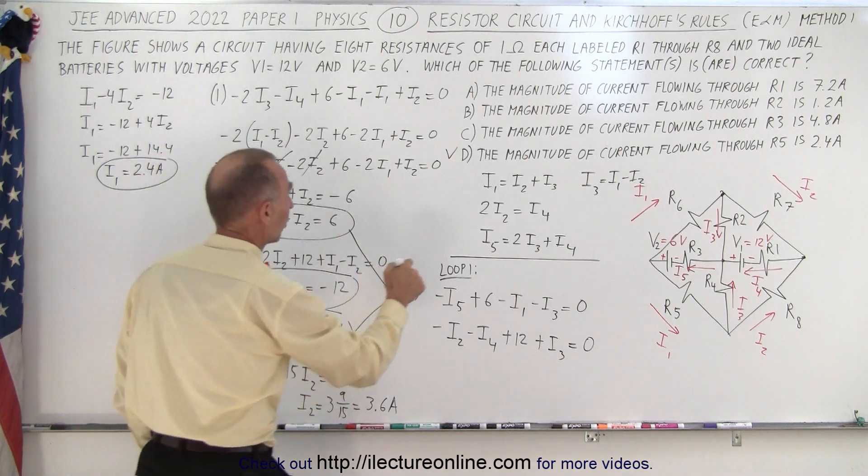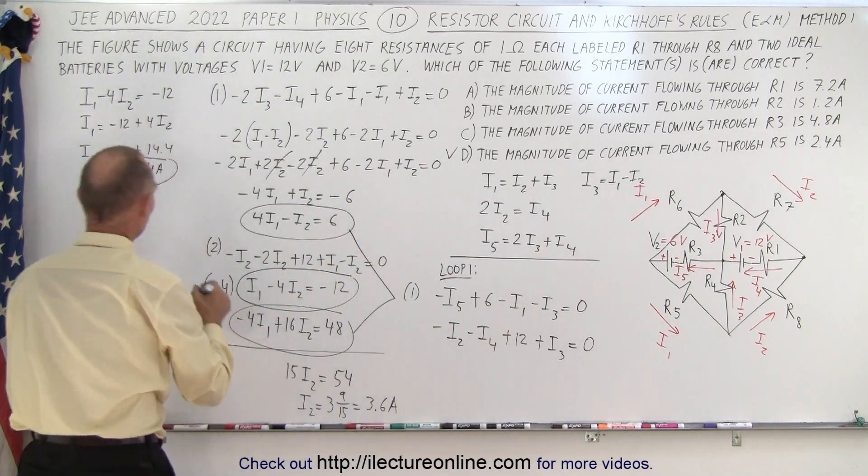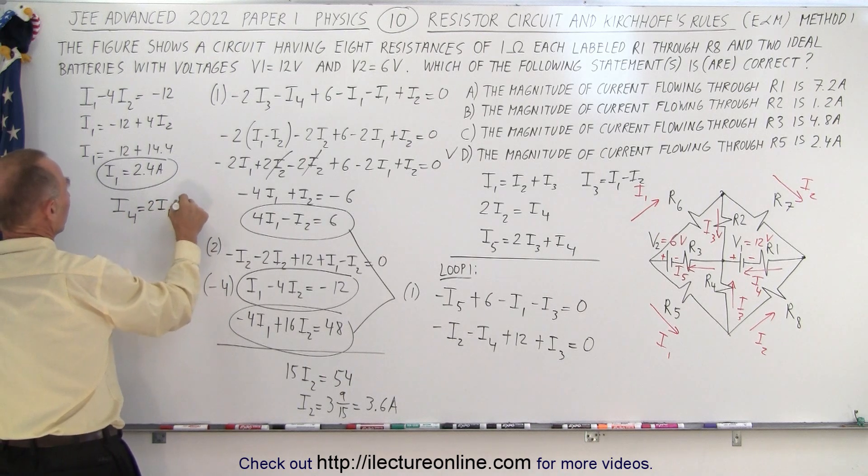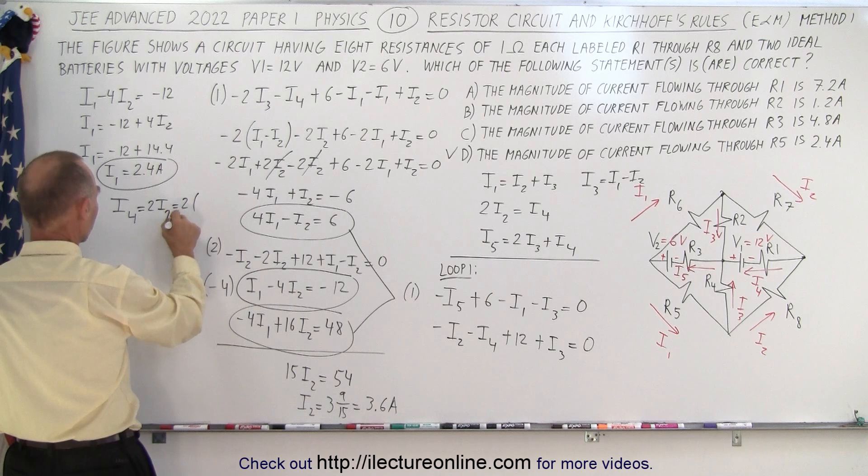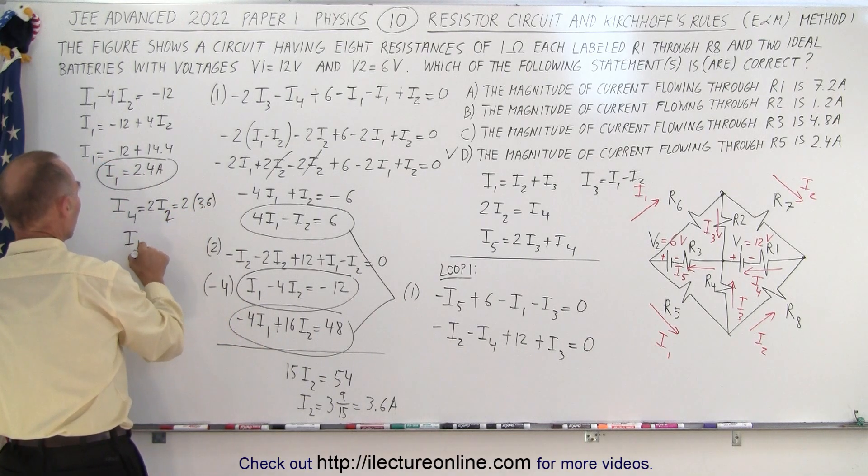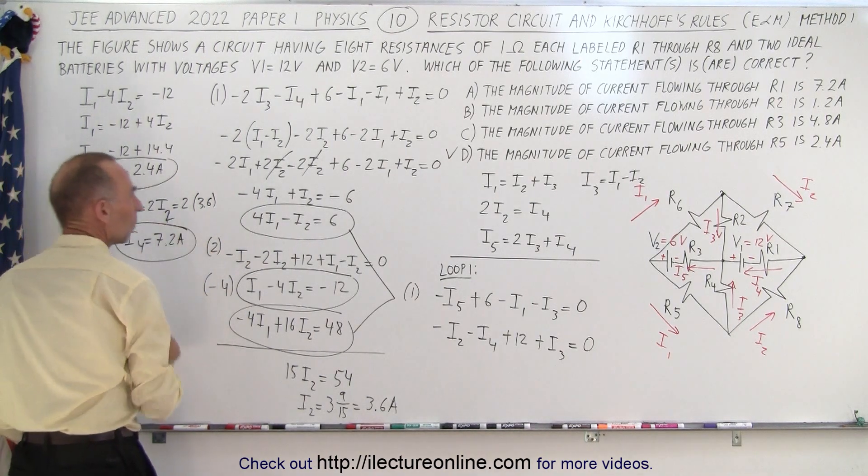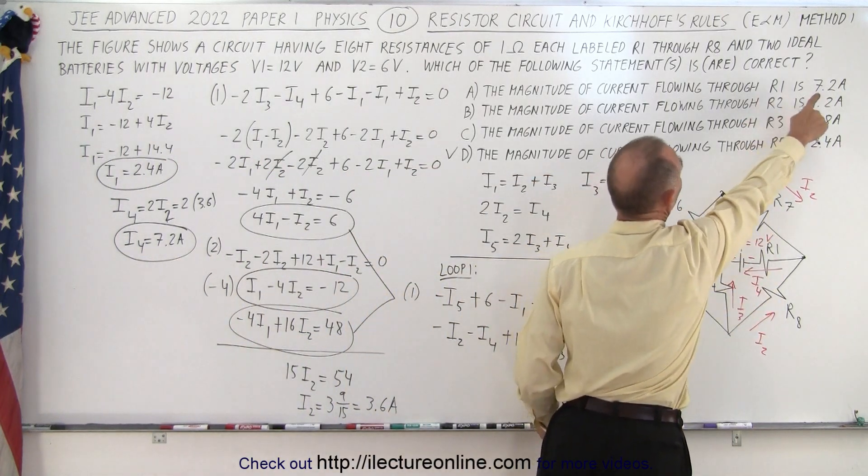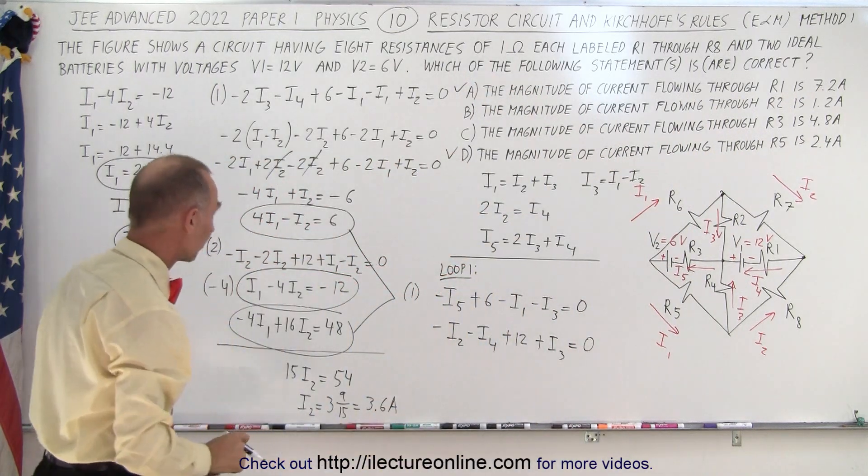Notice we have I2 and I4 here, so we can say that I4 is equal to 2 times I2, which is 2 times 3.6. So that means that I4 is equal to 7.2 amps. So I4 runs through R1, and that's 7.2 amps, so we know that A is correct as well. So far we've found two of the answers.